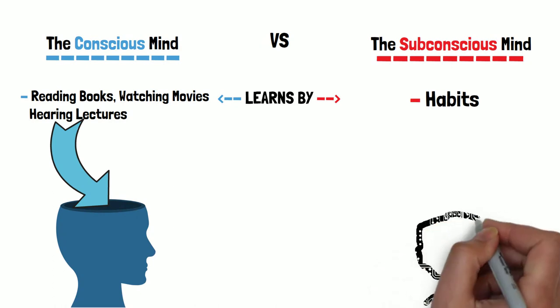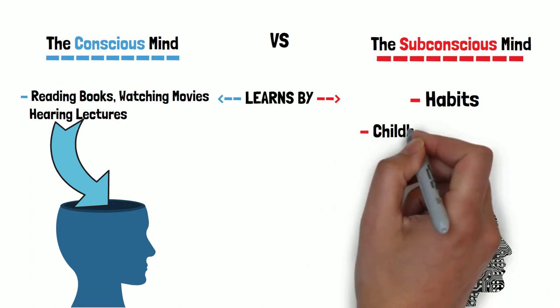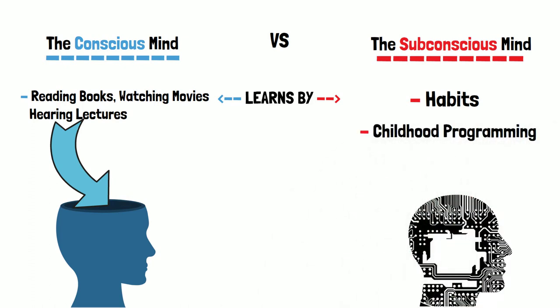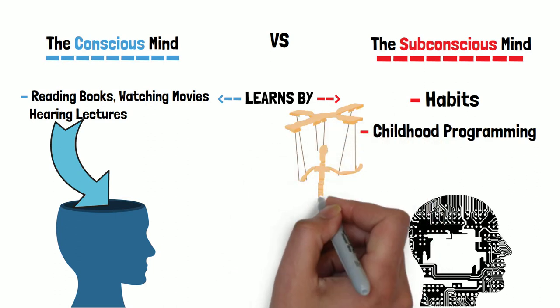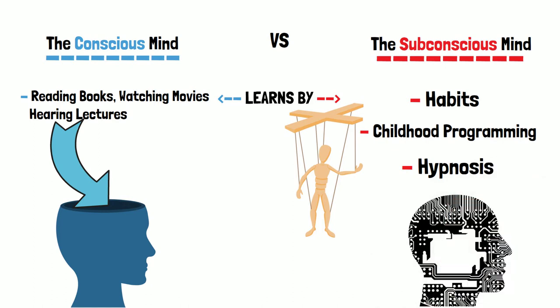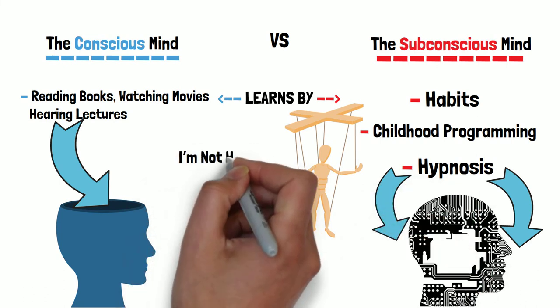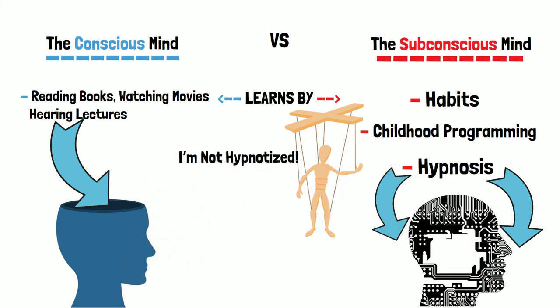Number one was the way we downloaded information into the subconscious mind in the first six or seven years of life. The subconscious mind is operating in a vibrational frequency of theta, which is hypnosis. You can download information straight into the subconscious if your mind is in a state of hypnosis. So that's one way of acquiring a program.